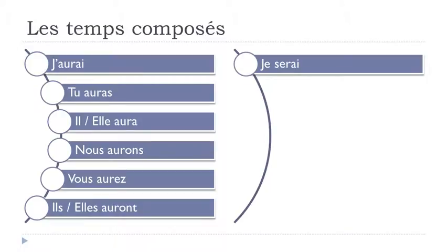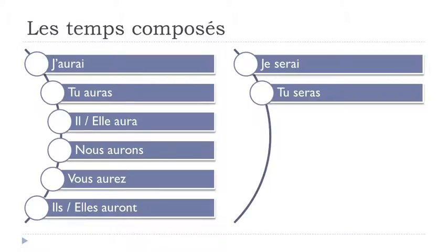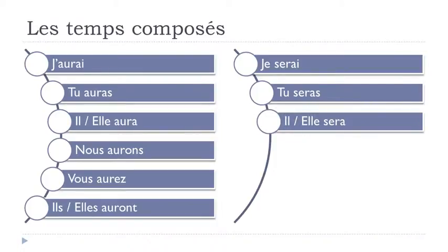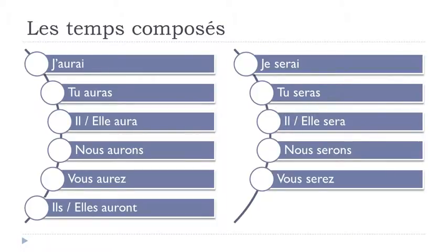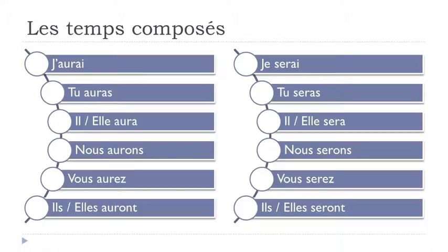Être at the future tense: je serai, tu seras, il sera, elle sera, nous serons, vous serez, ils seront, elles seront. Final S not pronounced for tu seras and nous serons; Z sound for vous serez; final T not pronounced for ils seront and elles seront. This is the future tense for avoir and être.